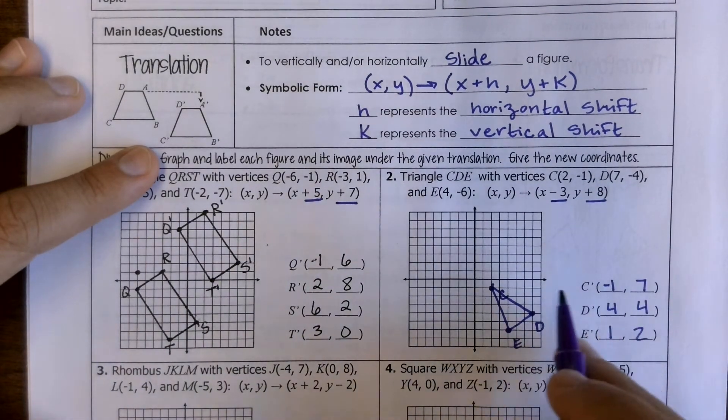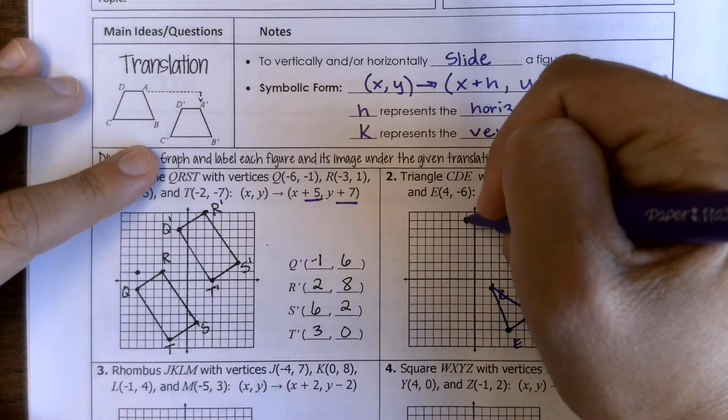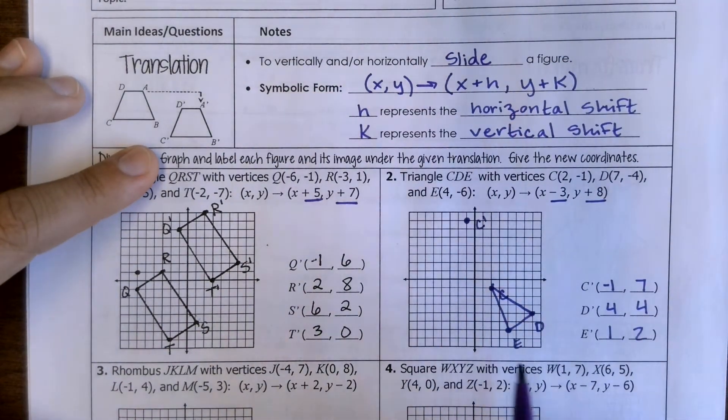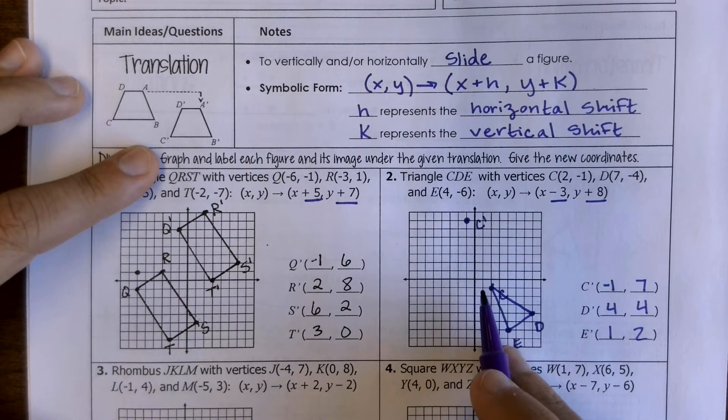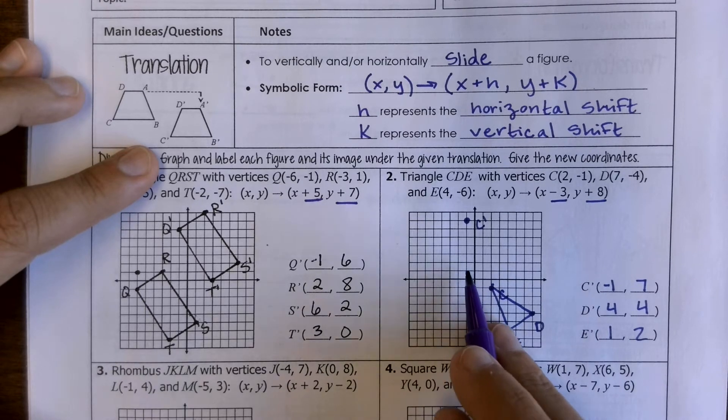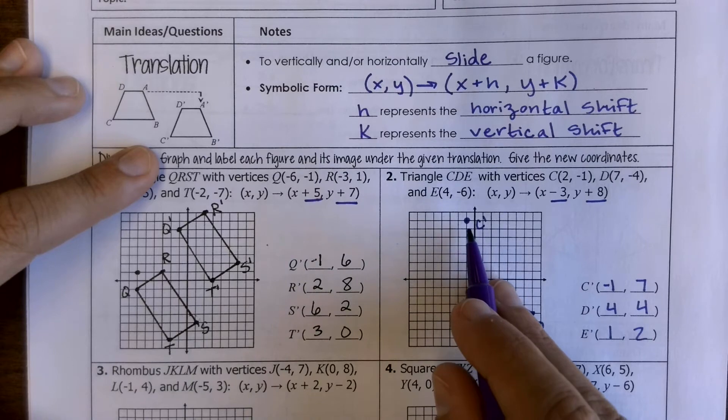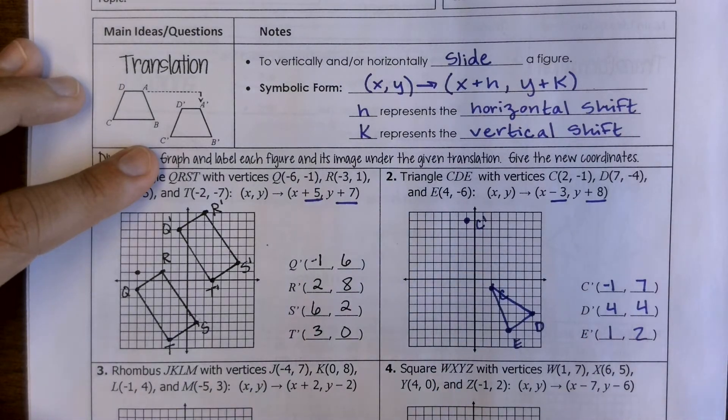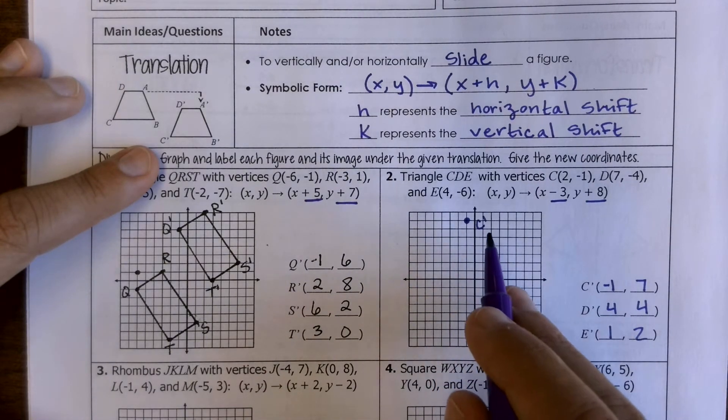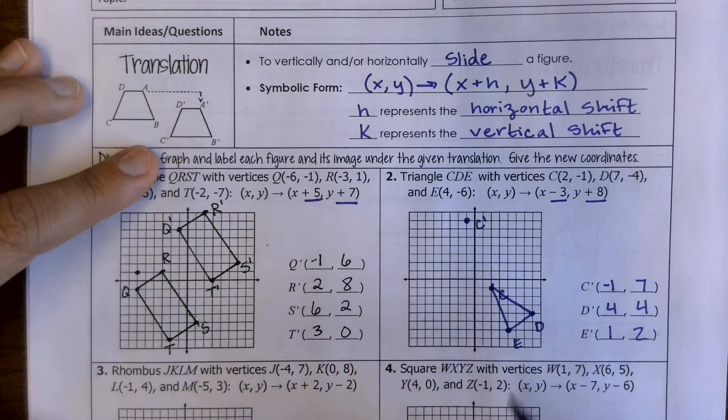So my C prime should be at negative 1, 7. And if I wanted to check that I could count that it went to the left 3, 1, 2, 3, and then up 8, 2, 3, 4, 5, 6, 7, 8. And it did. And from here my image should look exactly like my pre-image just shifted.